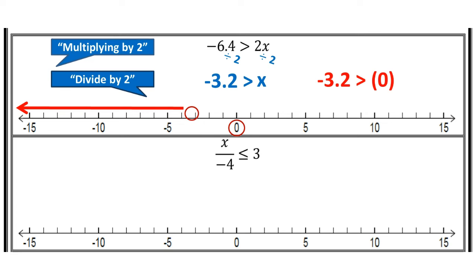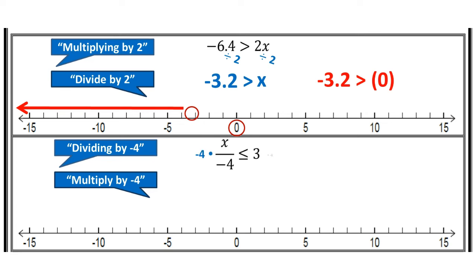Next, I'm going to solve this problem: x divided by negative 4 is less than or equal to 3. What's happening to my variable? I'm dividing by negative 4, so I'm going to multiply both sides by negative 4. When I multiply or divide by a negative number, I need to flip the inequality around. Negative 4 times x divided by negative 4 gives me x by itself, and 3 times negative 4 is negative 12. A lot of students leave it as is, but that inequality symbol needs to flip when you multiply by a negative. So it went from less than or equal to, to greater than or equal to. Had I plotted it with the wrong symbol, my final graph would have been incorrect.